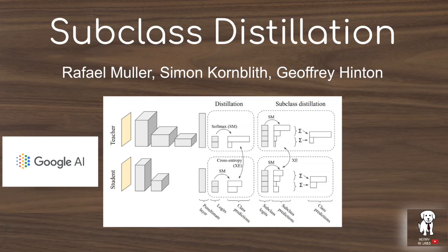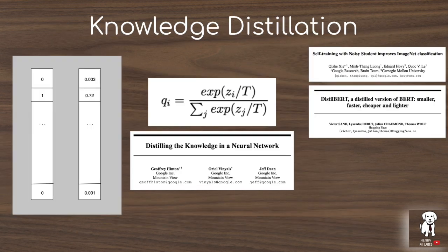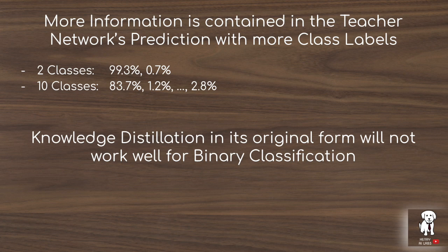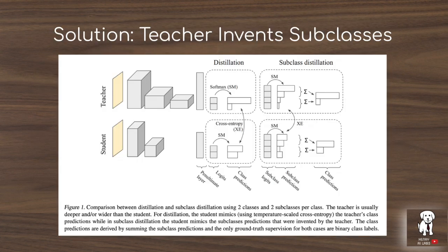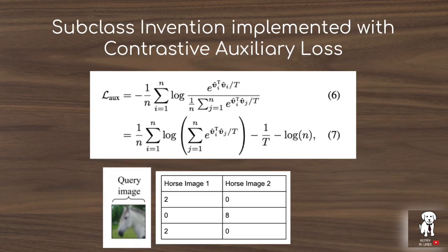This video explains subclass distillation from Google AI. Knowledge distillation is a popular learning algorithm that provides more training signal by tasking a student network to match the class label predictions from a teacher network. However, in binary classification problems, the student network doesn't get much extra signal since it's only predicting two classes. Subclass distillation recovers the benefit of multi-class classification by having the teacher invent subclasses implemented with a contrastive loss, resulting in better performing student networks that can also be trained faster.